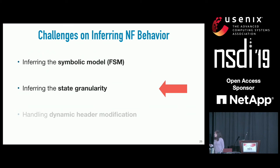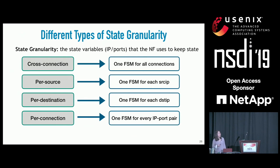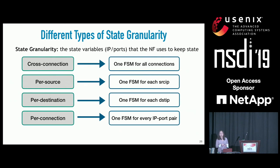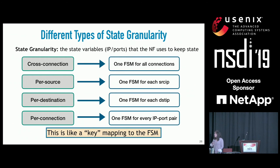Let's look at how we infer state granularity to tackle NFs that may not keep per-connection state. State granularity refers to the state variable—the set of IP/ports—that the NF uses to keep state. When an NF keeps cross-connection state, all connections share the same FSM. Per-source-state means there is one FSM per source IP. Similar logic applies for per-destination and per-connection state. You can view state granularity as a key mapping to the corresponding model in an ensemble representation.